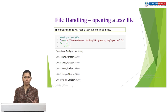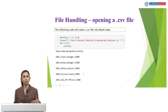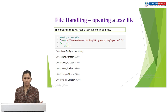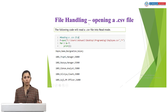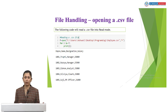Now let us see a few programs and how these processes work. Whenever you are using file handling, we always use a .csv file. Whichever file you have saved, try to save it with the .csv extension, and then you can use that file in file handling.